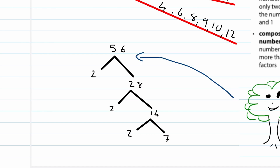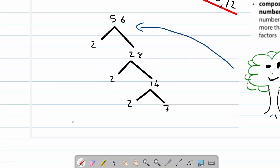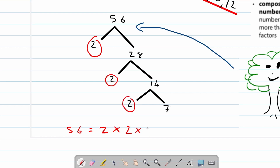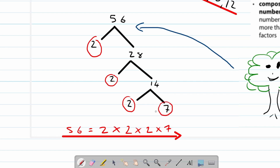Another way of writing this is: 56 equals 2 times 2 times 2 times 7. As you can see, all of these are factors and prime numbers at the same time — these are our prime factors.